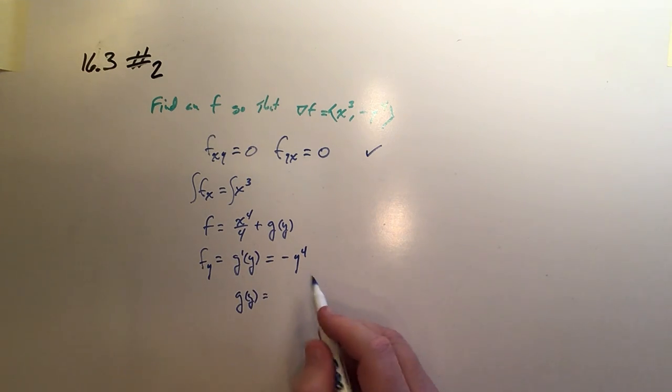g(y) will be equal to, if I take the integral of that, it's going to be -y^5/5. Of course, you might think you've got to add on a constant. And strictly speaking, you do.